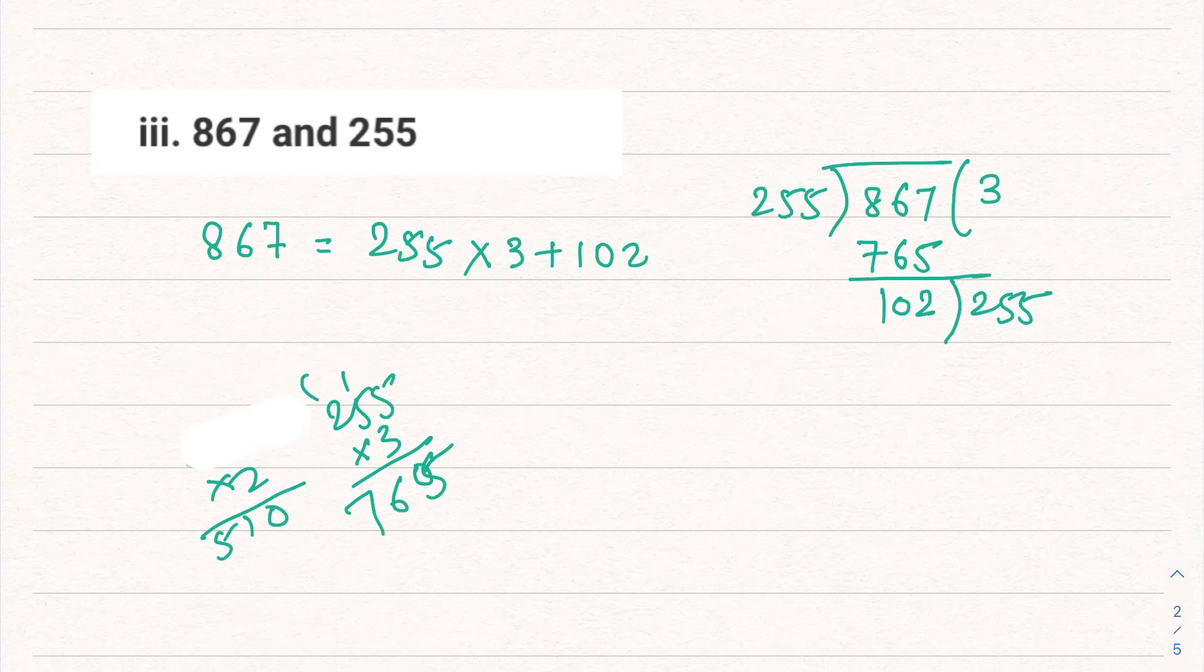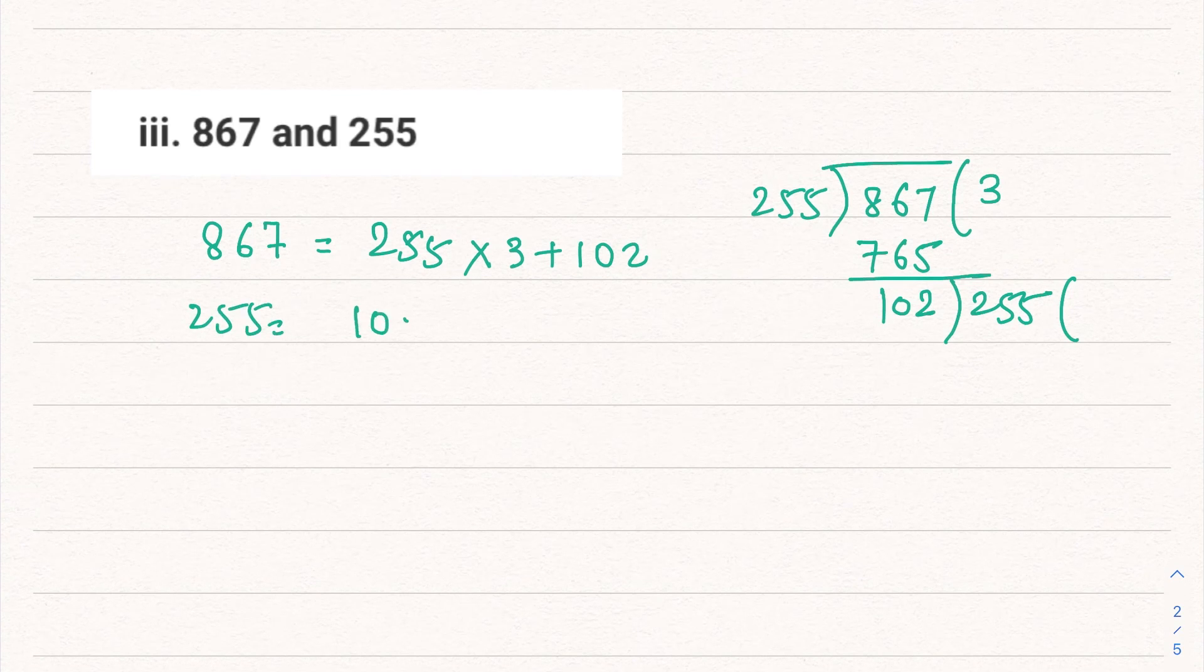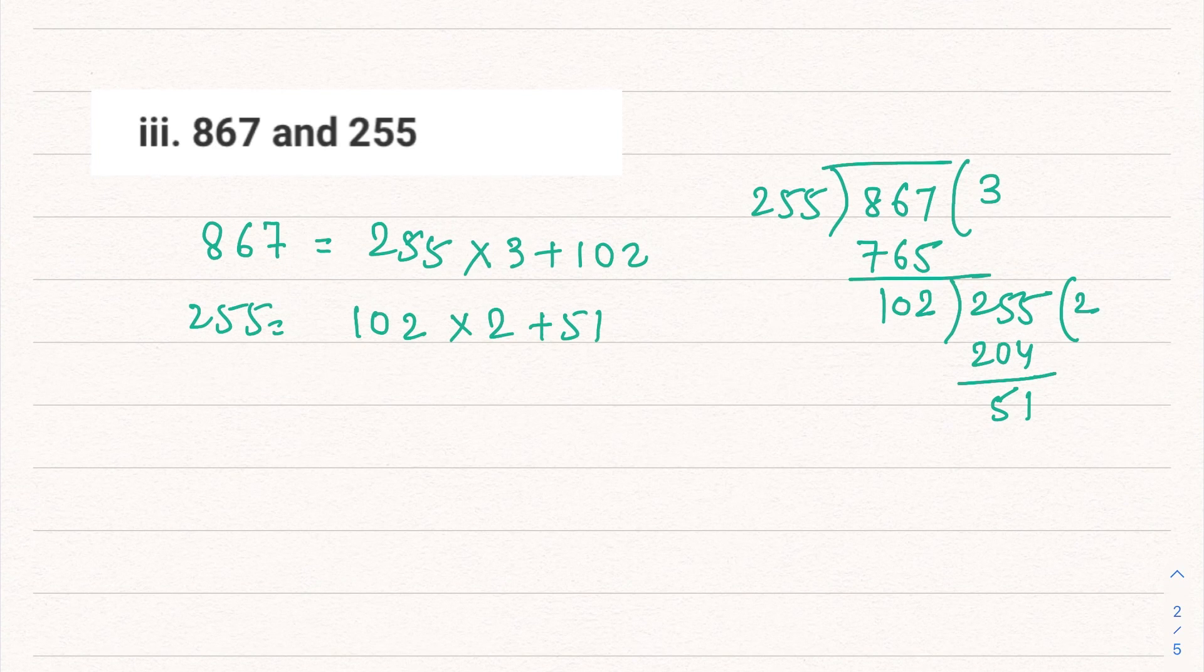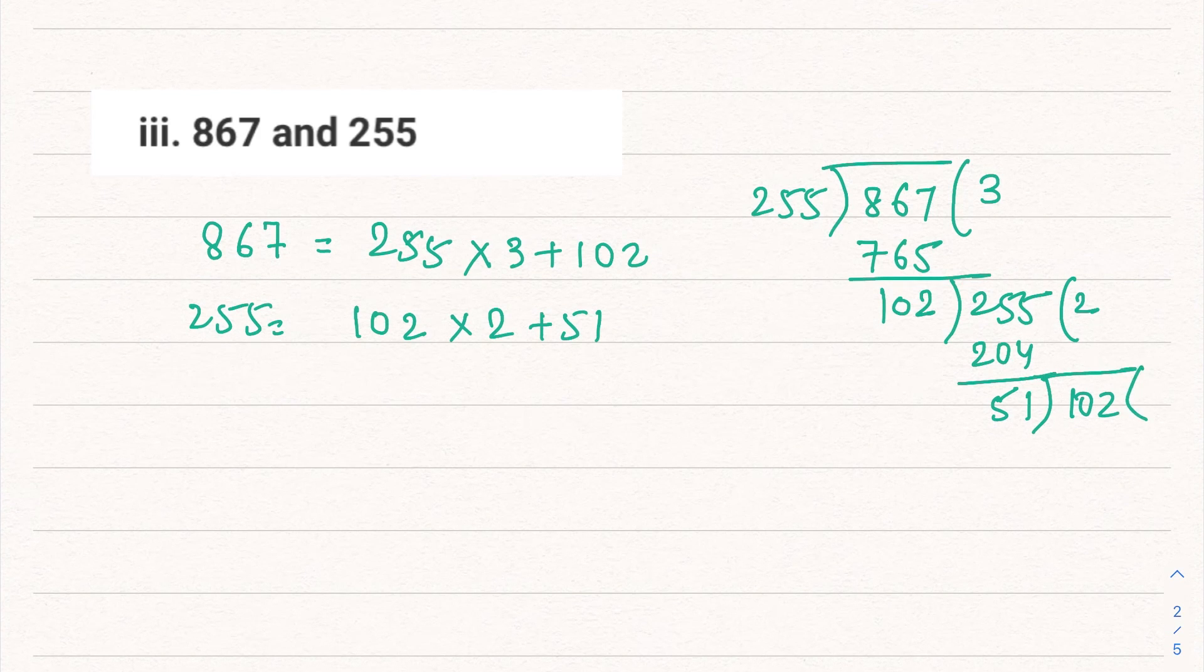Now 255 can be written as 102 into 2 plus 51. Now we'll divide 102 by 51. So 51 times 2 is 102.